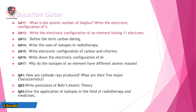Question 13: Define the term carbon dating. Question 14: Write the uses of isotopes in radiotherapy. Question 15: Write the electronic configuration of carbon and chlorine. Question 16: Write down the electronic configuration of Al. Question 17: Why do the isotopes of an element have different atomic masses?